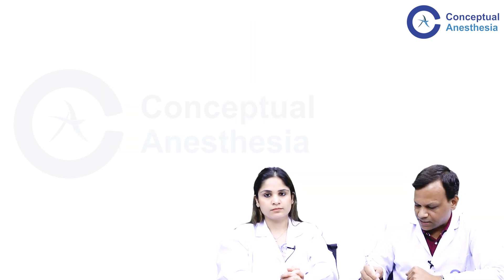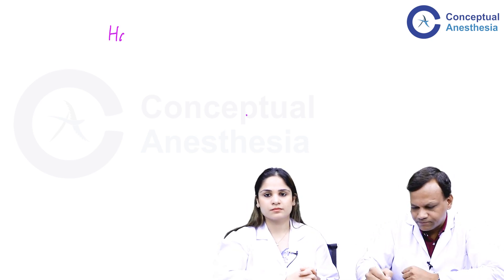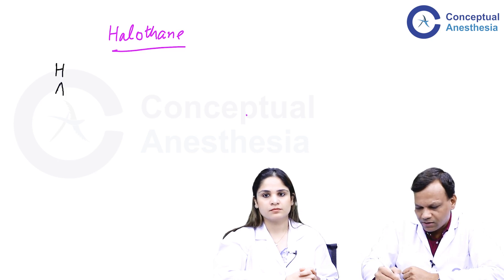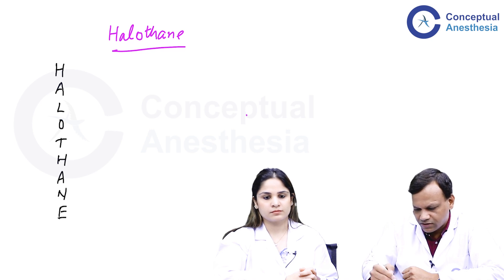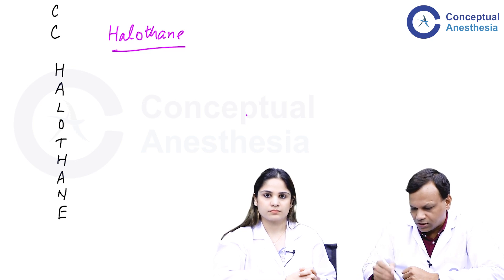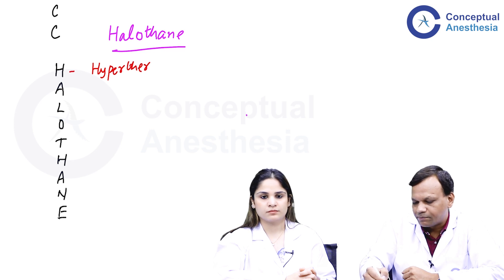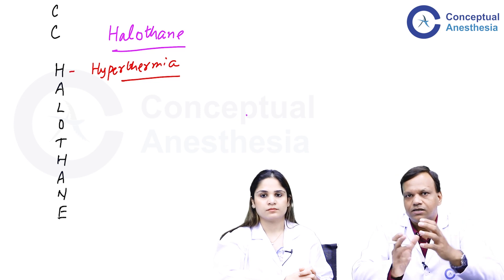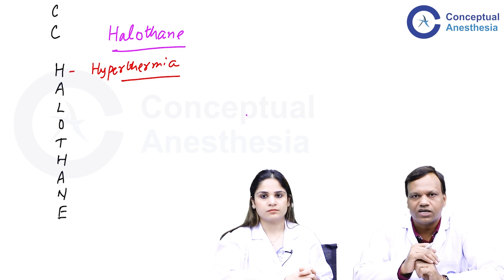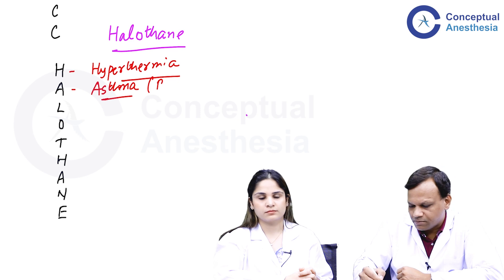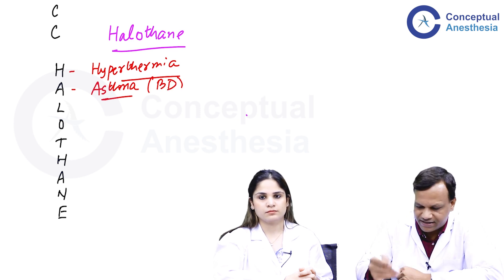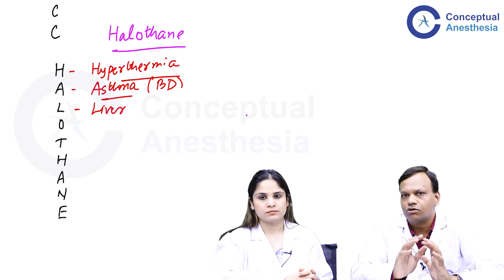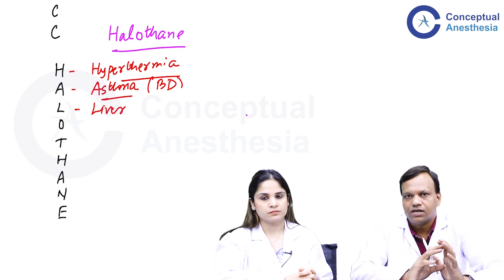The next drug is halothane. Although halothane is not commonly used nowadays, it is still asked in exams. Using the mnemonic HALOTHANE: H is for hyperthermia — halothane can induce malignant hyperthermia, which is also caused by succinylcholine. A is for asthma — halothane is a good drug for asthmatic patients because it is a potent bronchodilator. L is for liver — halothane is hepatotoxic, and the risk of hepatitis increases with repeated doses. Halothane should not be repeated, usually within two to three weeks of the first administration.